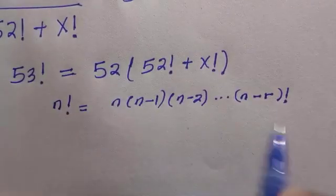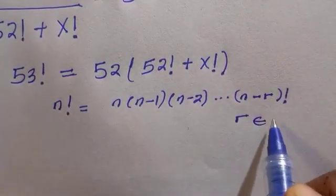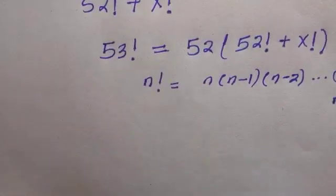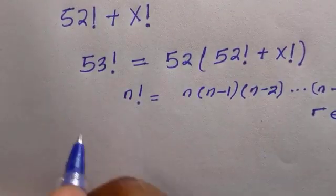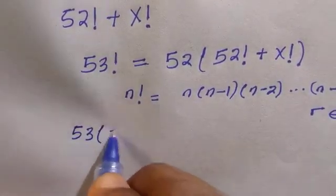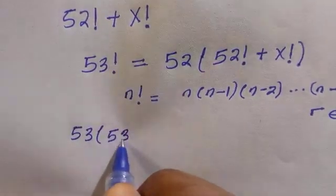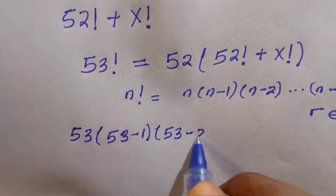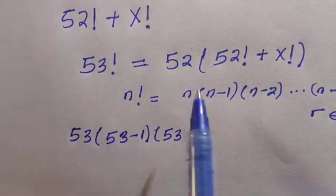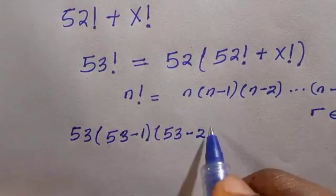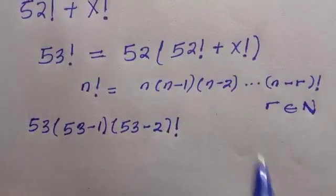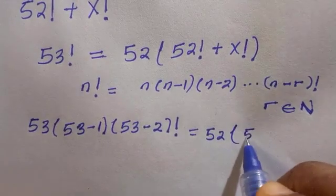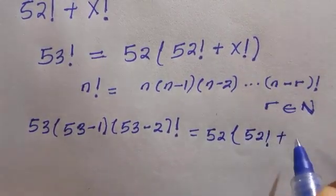By applying this, we have 53 times the quantity 53 minus 1 times 53 minus 2. I'm going to stop here because 53 minus 1 is just 52, so I have something to cancel. That's why I stopped here. So this equals 52 times the quantity 52 factorial plus x factorial.